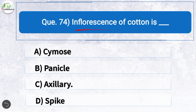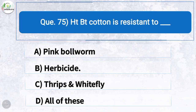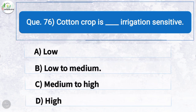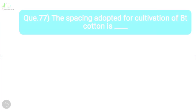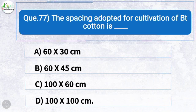Question seventy-four: Inflorescence of cotton is — the correct answer is option C: axillary. Question seventy-five: HTBT cotton is resistant to — the correct answer is option B: herbicide. Question seventy-six: Cotton crop is — the correct answer is: low to medium irrigation sensitive. Question seventy-seven: The spacing adopted for cultivation of BT cotton is — the correct answer is option D: 100 × 100 cm.